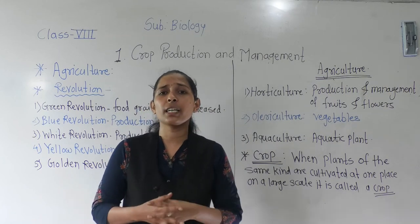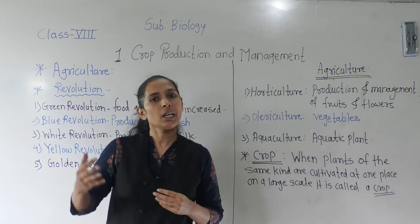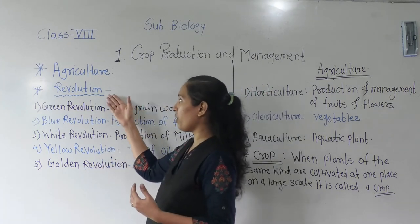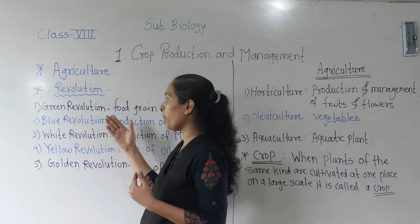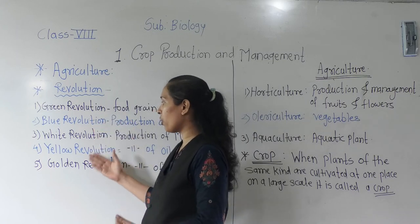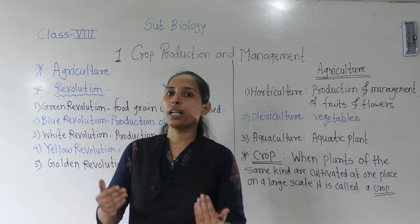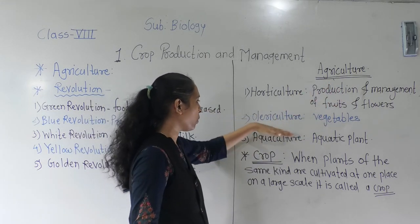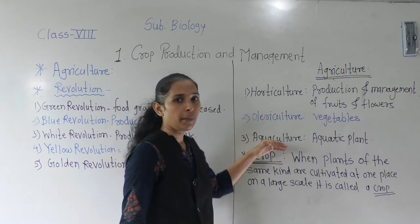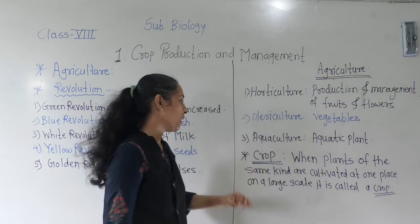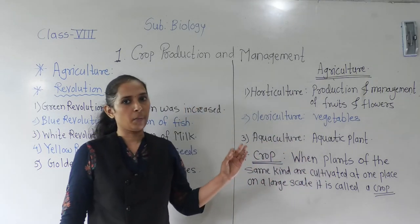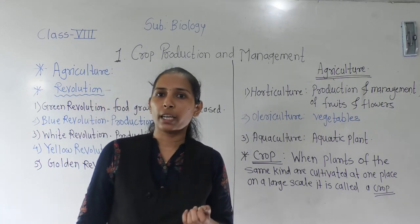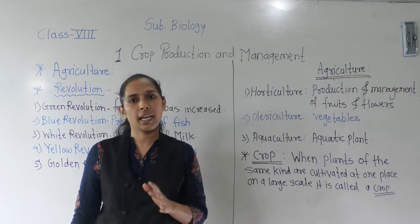Let us revise what we discussed today. We discussed the different revolutions in agriculture: Green Revolution, Blue Revolution, White Revolution, Yellow Revolution, and Golden Revolution. We also discussed the different branches of agriculture — Horticulture, Olericulture, and Aquaculture — and lastly we discussed the crops and the definition of a crop. On this note, I will say goodbye. Tomorrow I will meet you again in the next lecture. Thank you.